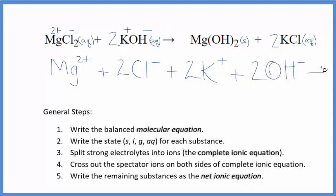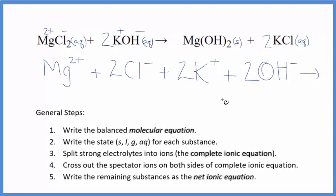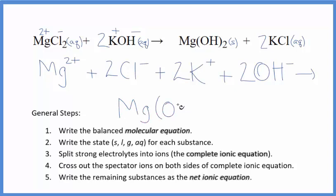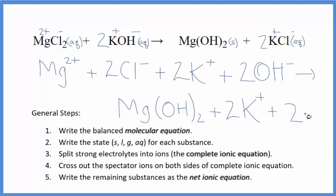These are the reactants in our net ionic equation. In the products, since magnesium hydroxide is considered a solid, we're not going to split that apart — we keep it together. We don't split solids apart in net ionic equations. Then we have 2 potassium ions and 2 chloride ions on the product side, just like in the reactants.